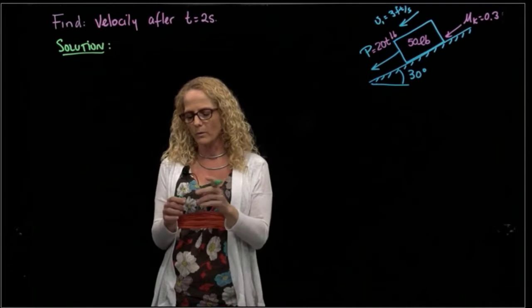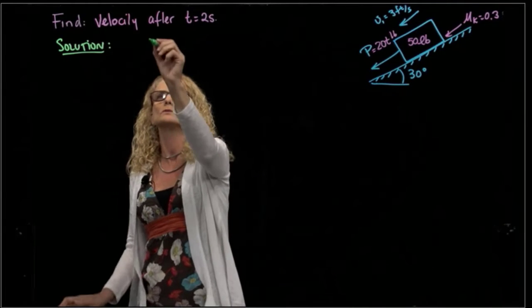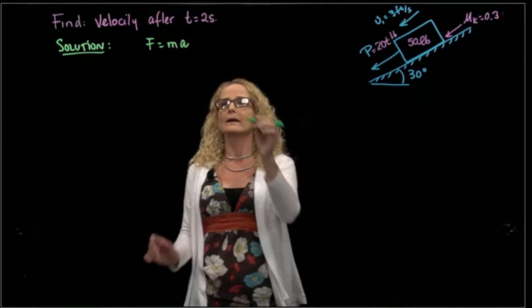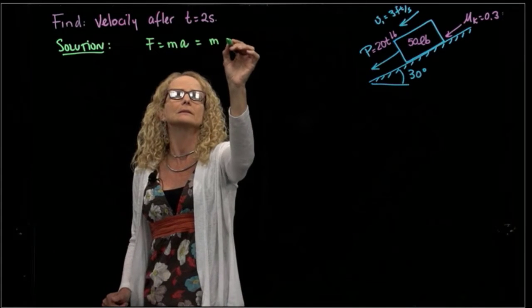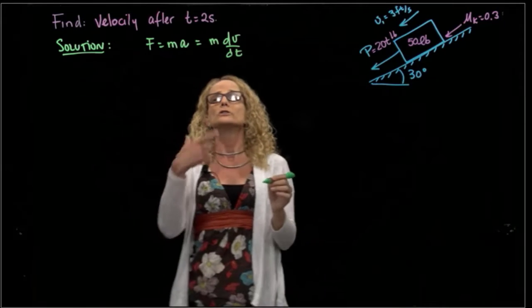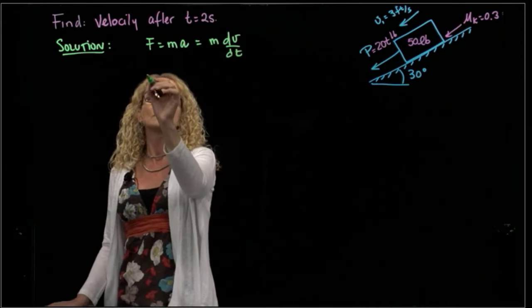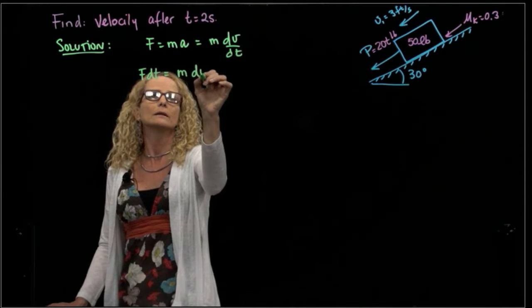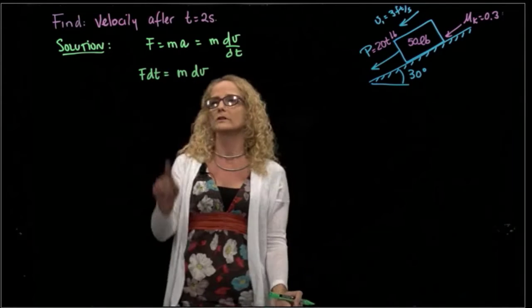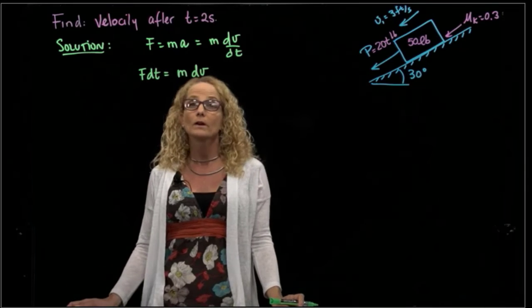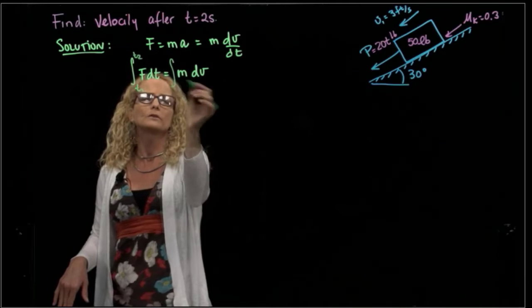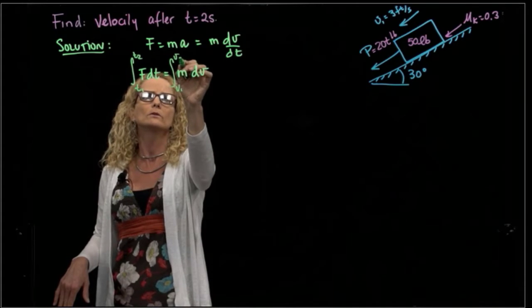Our equation of motion is force equals mass times acceleration. But that could also be written as mass times derivative of velocity over time. So if we pass time over here, we will have that other equation: force times differential of time equals mass times differential of velocity. If we want to find the velocity, we can integrate both sides of the equation, V1 and V2.